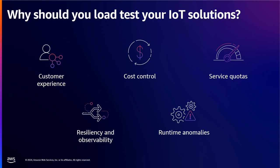A third reason is service quotas. AWS has various limits associated with IoT services, or even beyond IoT, which prevents abuse and ensures a quality of service. Load testing will help you understand how your IoT solution is behaving when you are exceeding or reaching your service quotas. Load testing can help you assess how well your IoT solution handles failures or disruption. By simulating various failure scenarios, such as a network outage, you can evaluate the effectiveness of your implemented IoT solution. You can validate that your failover and auto-scaling mechanisms work as intended, and make sure you're alerted when something isn't working as planned. Last is runtime anomalies. Load testing can help confirm how your IoT solution handles runtime anomalies, such as message duplication, and make sure you're accounting for idempotent message processing.